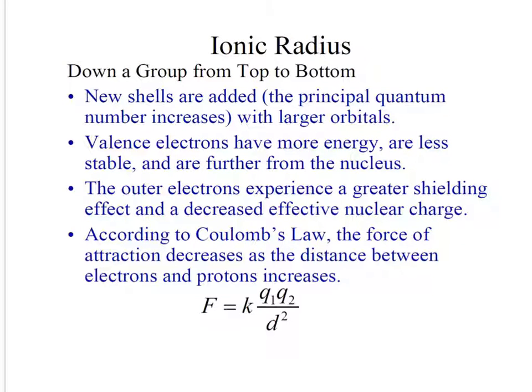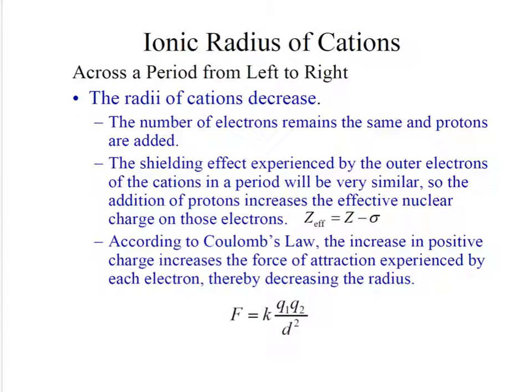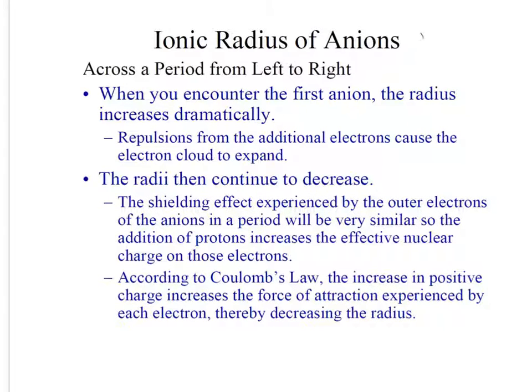Ionic radius down a group, these are your justifications. Ionic radius of cations. This is how you would justify your answer to explain why cations are smaller. These are your justifications for why anions get larger.